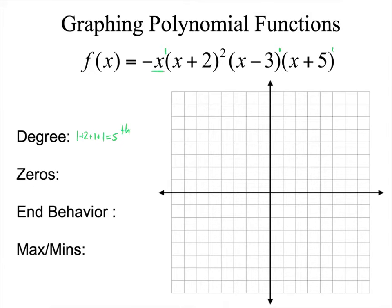My zeros are based on these, taking opposites. So my zeros are 0 for the first one. The opposite of 2 is negative 2. The opposite of negative 3 is positive 3, and the opposite of 5 is negative 5.